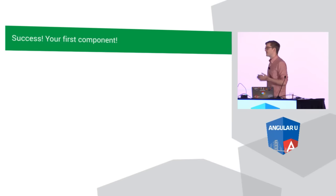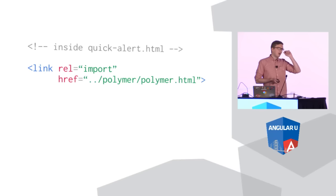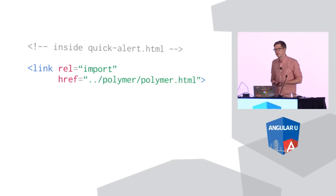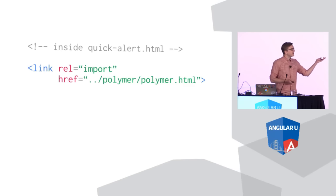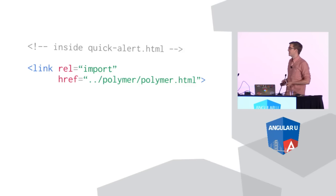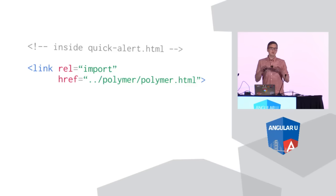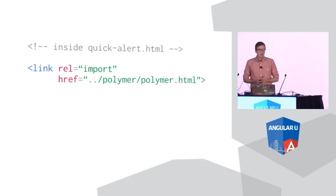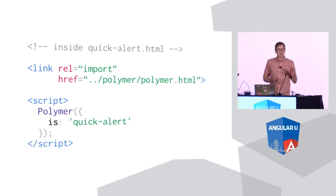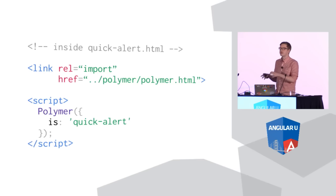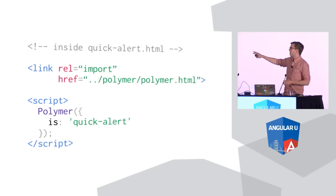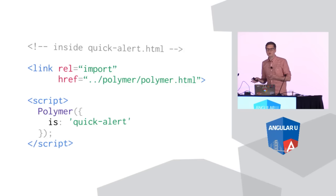Any time you're creating a component, you always want to start off with an HTML file that will hold your component's definition. I've got an HTML file called quickalert.html. The first thing I'm going to do is import the definition for Polymer using an HTML import — that's one of the web component standards we've been working on. You can think of this the same way you load jQuery before registering a jQuery plugin. The cool thing about HTML imports is that they naturally deduplicate — if multiple elements all import the same resource like Polymer, it will only be loaded one time.